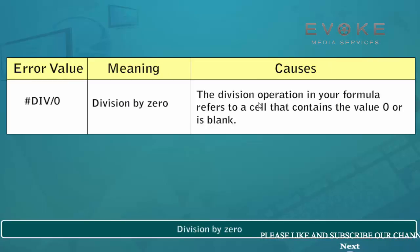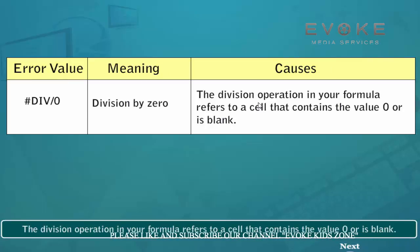Division by zero. The division operation in your formula refers to a cell that contains the value 0 or is blank.